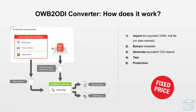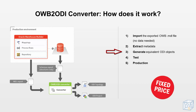How does the conversion work? First of all, you need to provide us with an exported OWB MDL file. We only need the file, not the data. Our converter will extract the metadata from the MDL file and we use the ODI API to generate the equivalent ODI objects. For example, OWB locations will become ODI topology logical schemas, OWB modules will become ODI folders, and OWB mappings will be converted into ODI packages, interfaces or mappings.